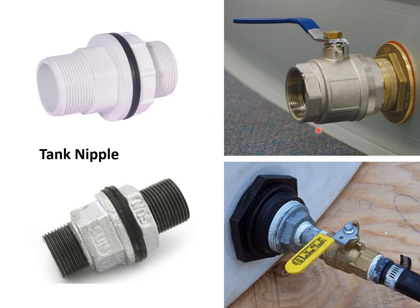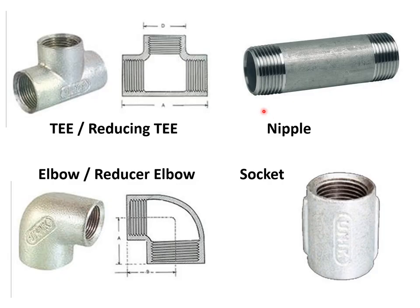It is good practice to install a ball valve just immediately after the tank nipple through which we can control the flow of water in the entire pipeline by putting it on or off. A nipple is a small piece of pipe having threads on both external ends and is termed as a nipple in plumbing terminology. It may be 3 inch, 4 inch, 6 inch, or 9 inch long.